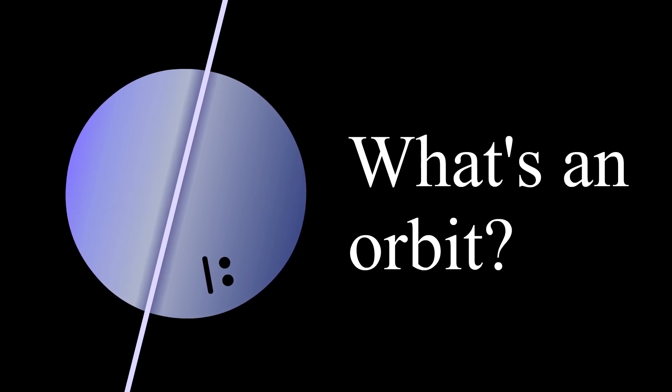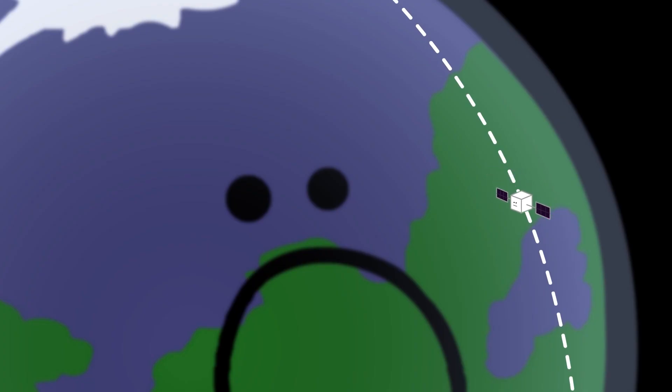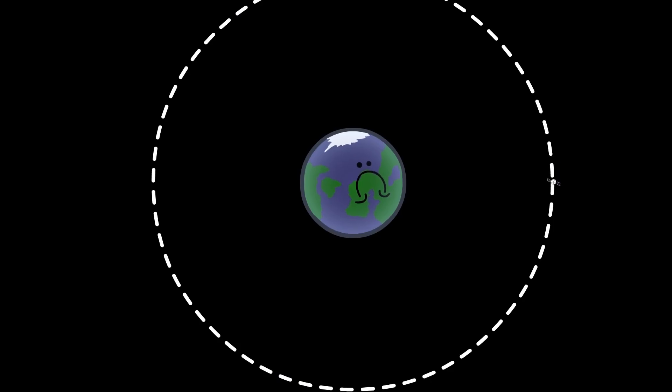What's an orbit? An orbit is a curved path that an object follows around a body, be it a planet, moon, or whatever, in space. There's lots of different types of orbits. There's low Earth orbits, geostationary orbits, highly elliptical orbits, decaying orbits, and those freaky deaky black hole orbits.